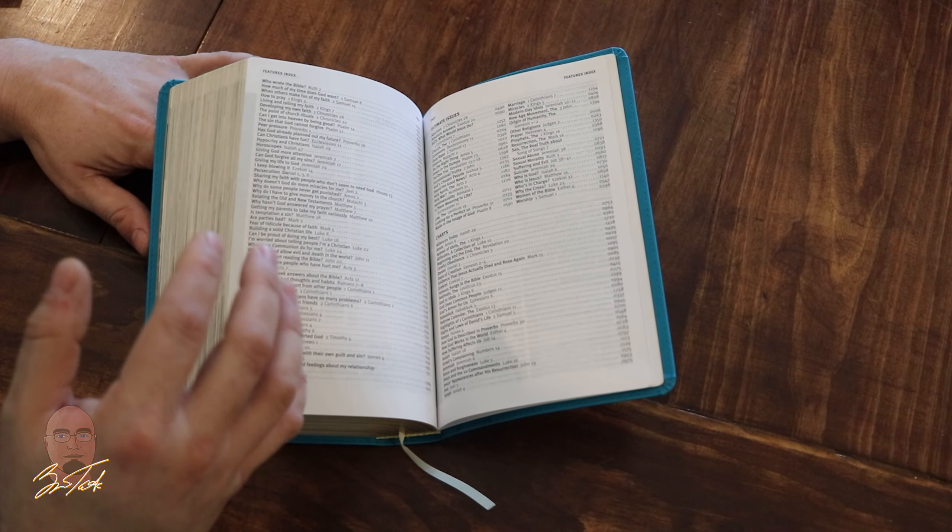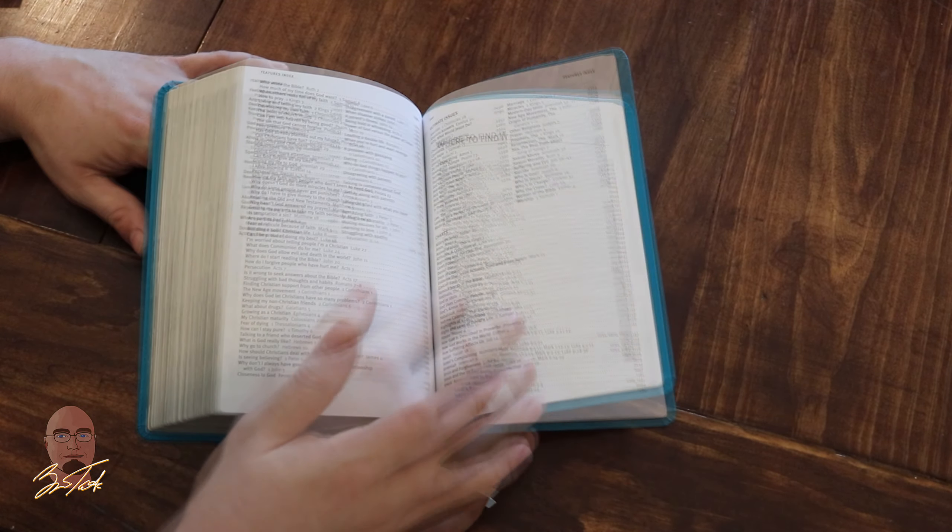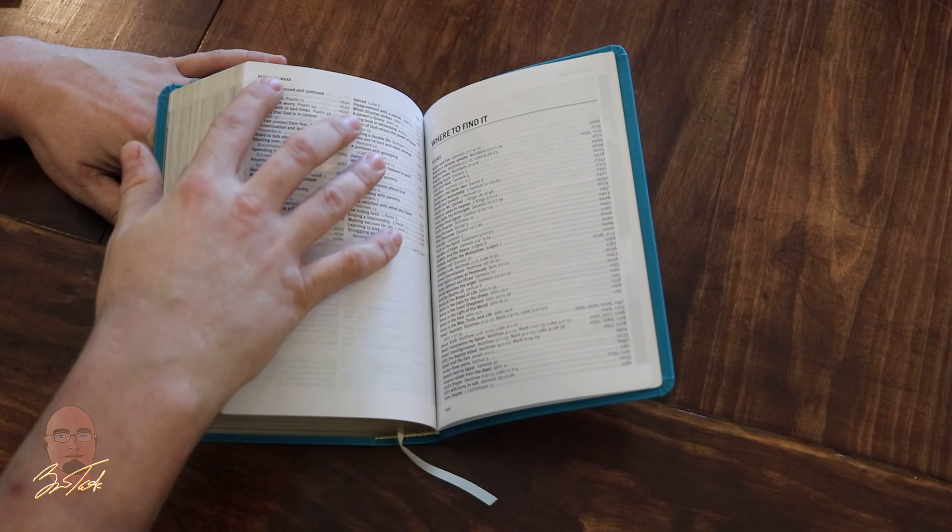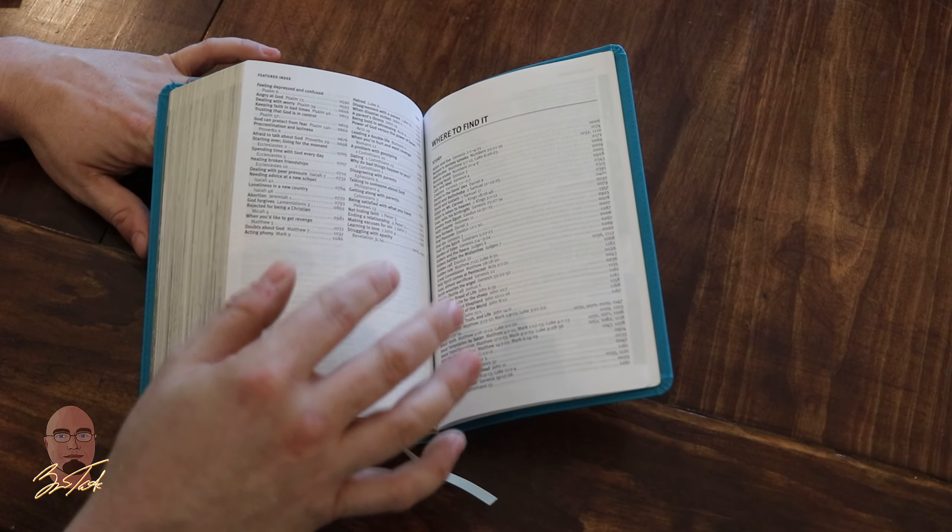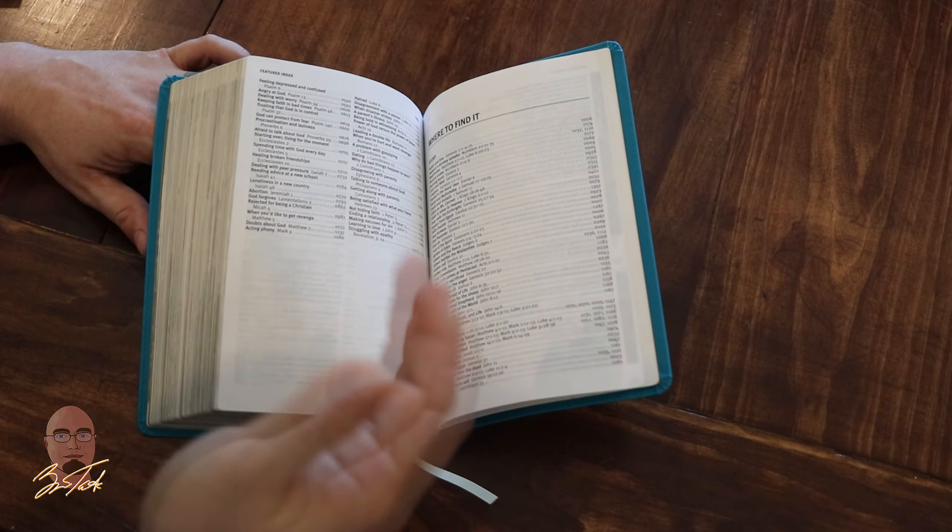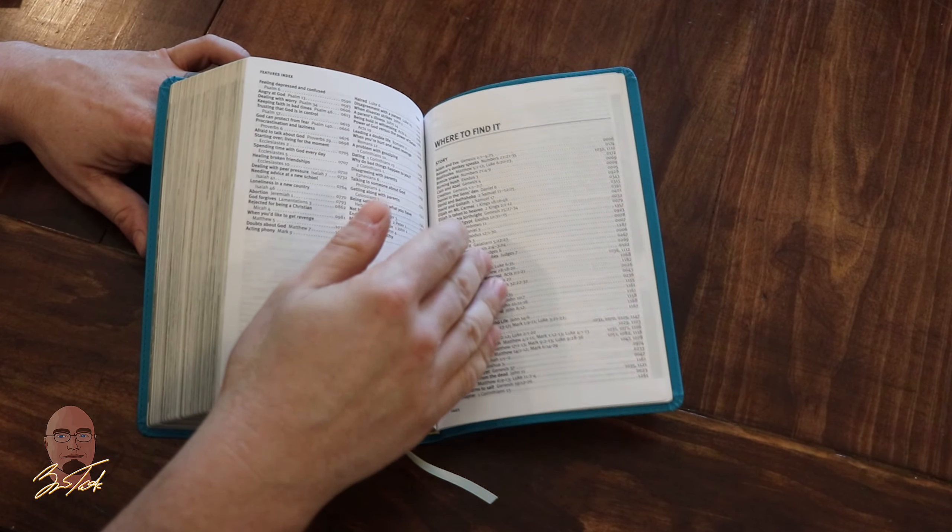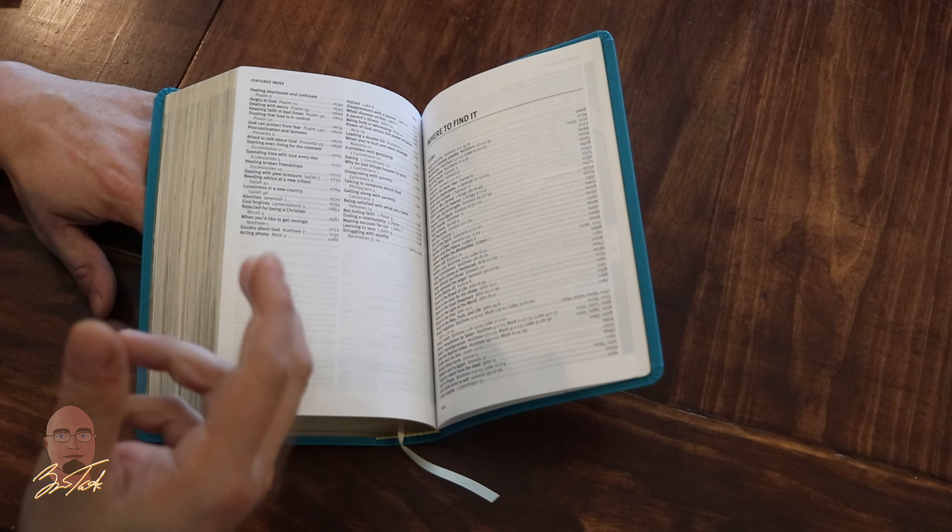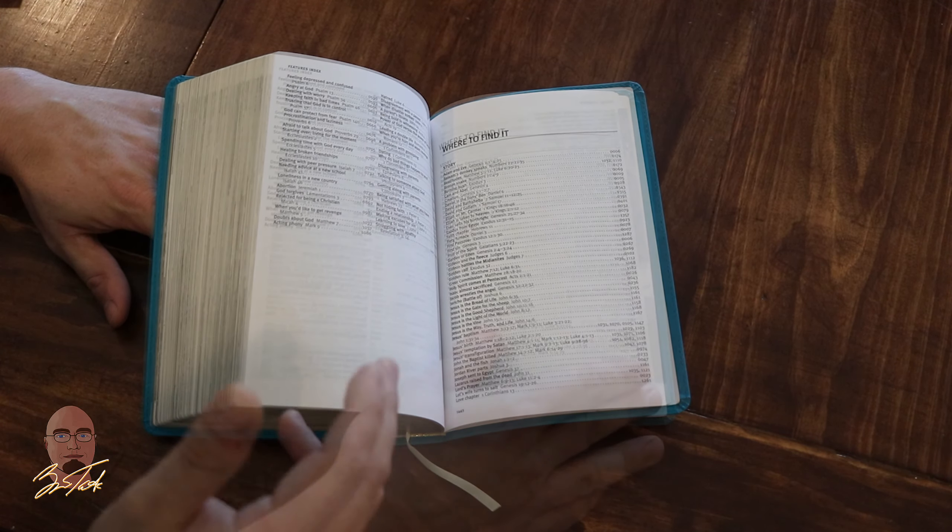At the end of the Features Index, you have the 'Where to Find It.' This also, I think, needs to be in the front. Kids are more reactive; they're going to have something happen at school and come home and want to make sense of it. They're not going to have a standardized method of study like you or I might. I think that's why these things need to be in the front.